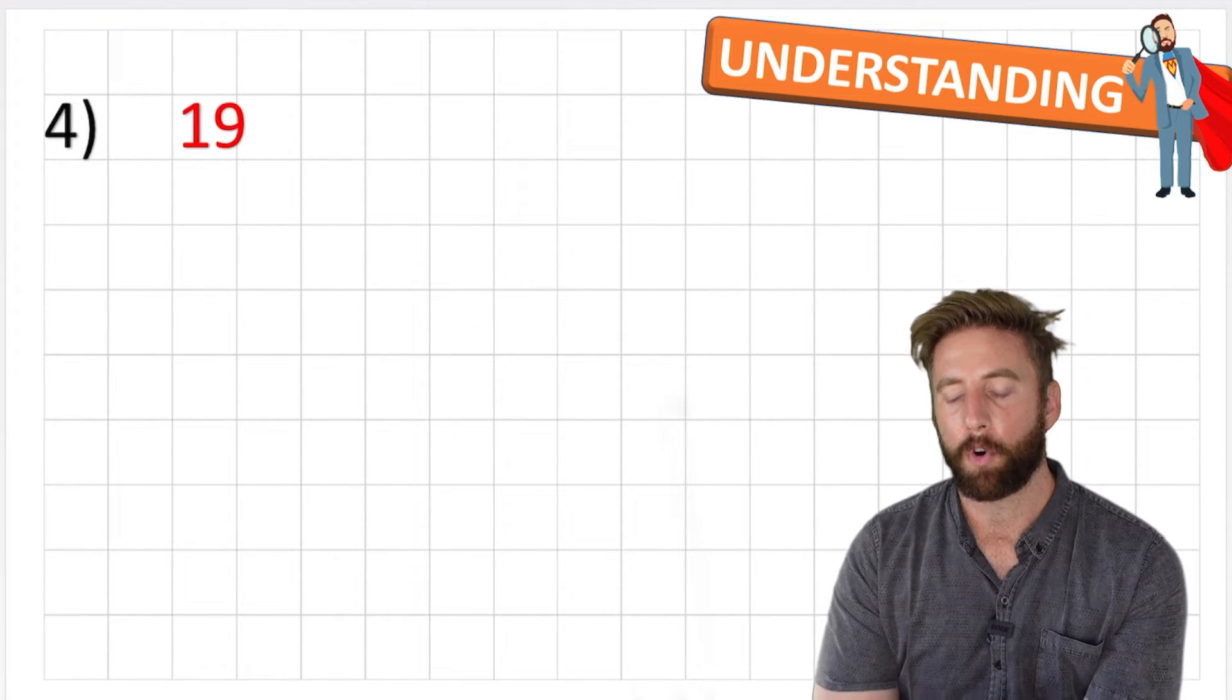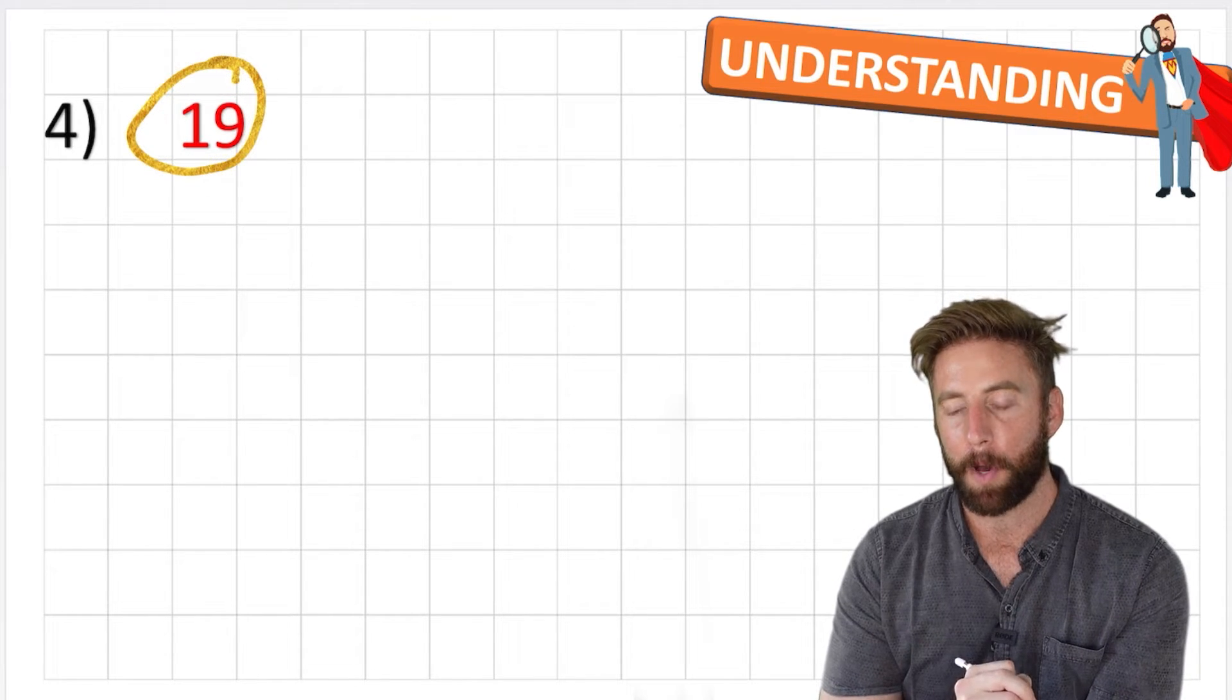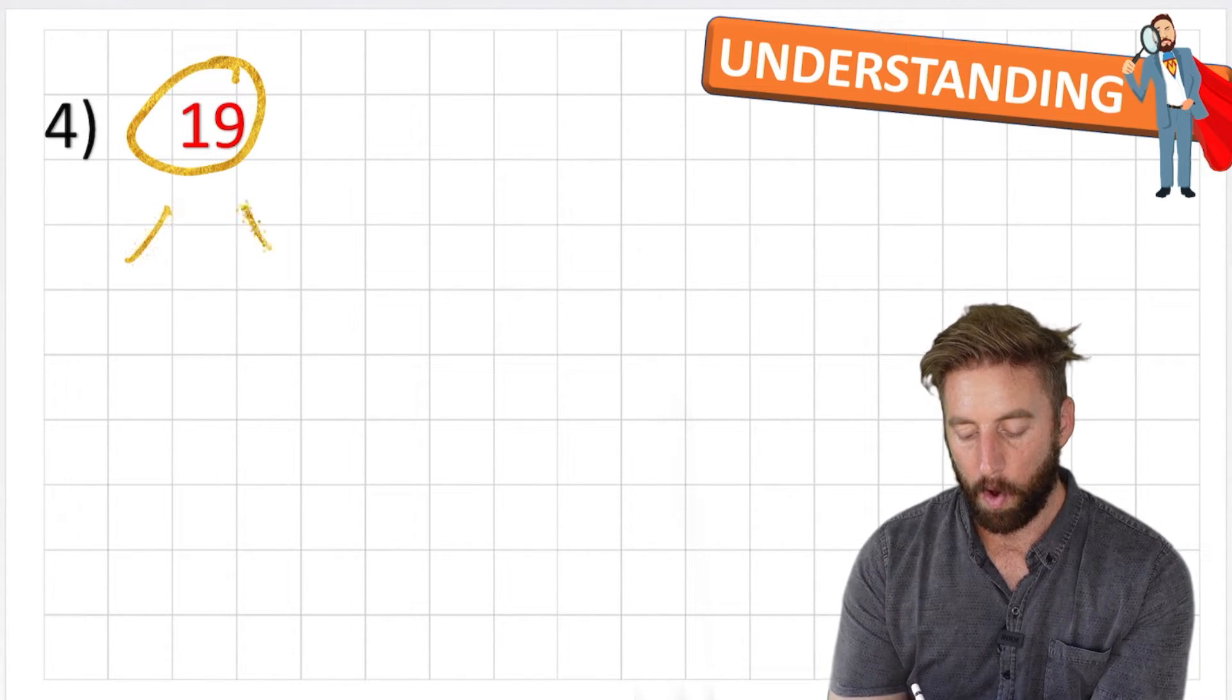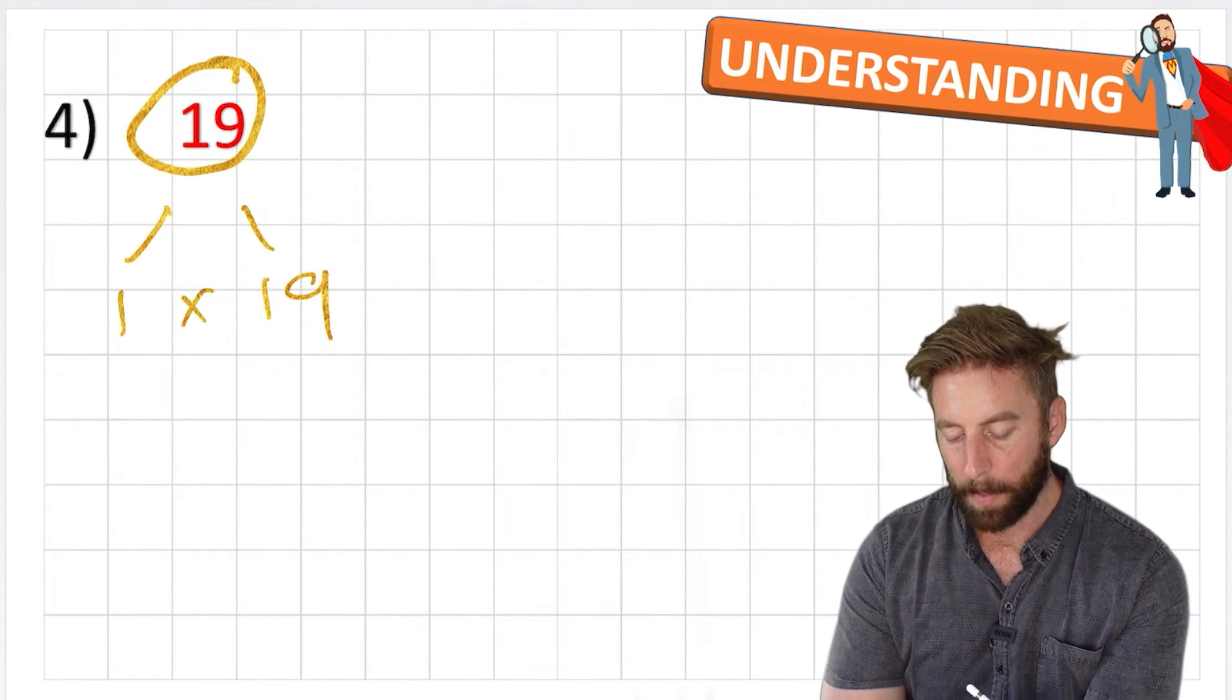Okay, and let's look at question number four, nineteen. So we know it's odd, so there's a chance that it can be a prime number. Let's see. So I can do one times nineteen. And now let's quickly go up our other multiplications.